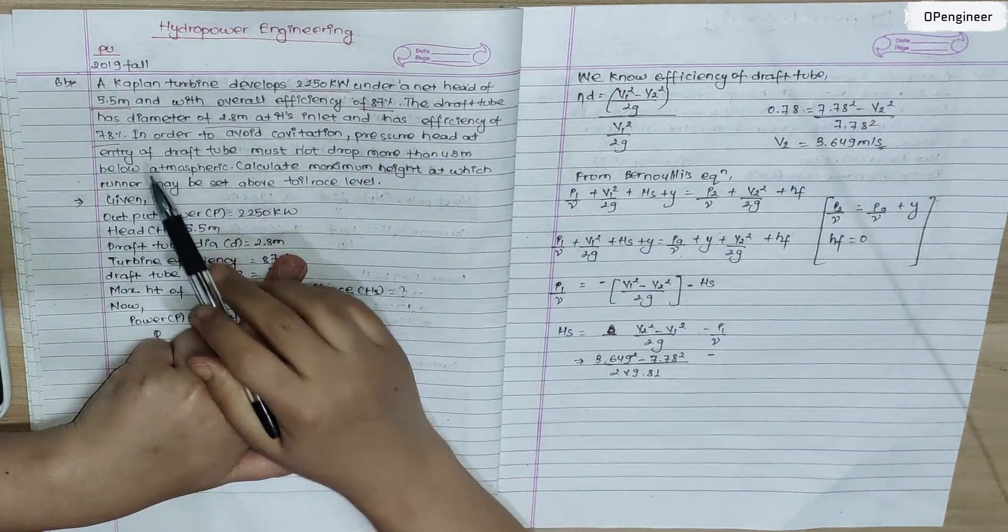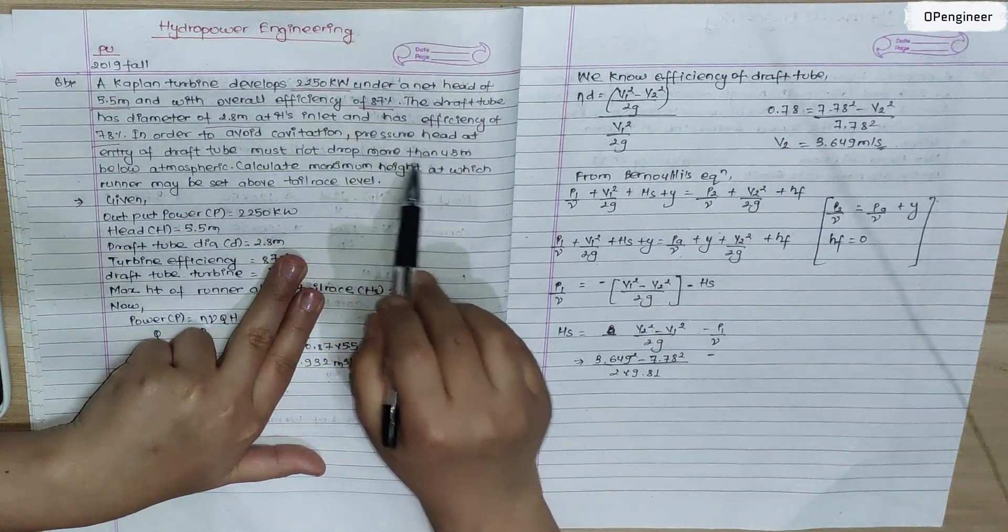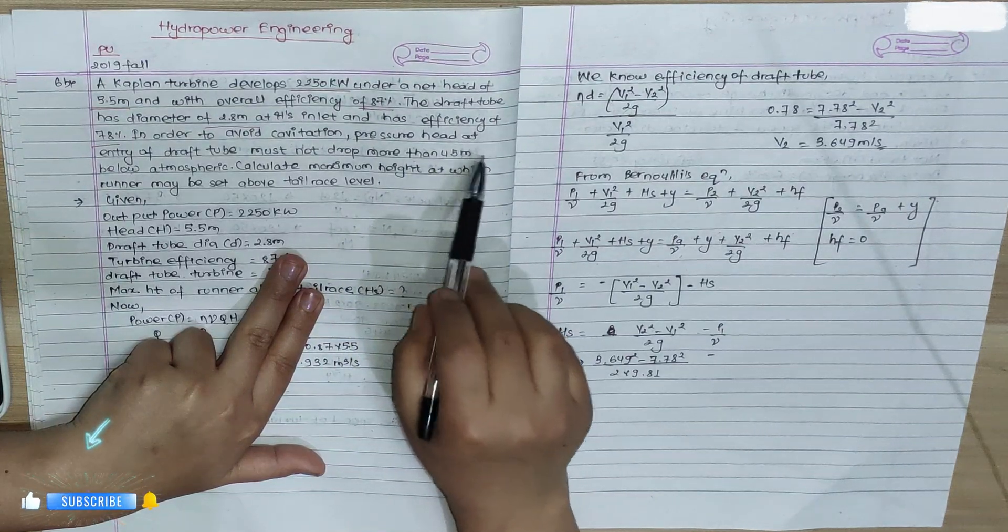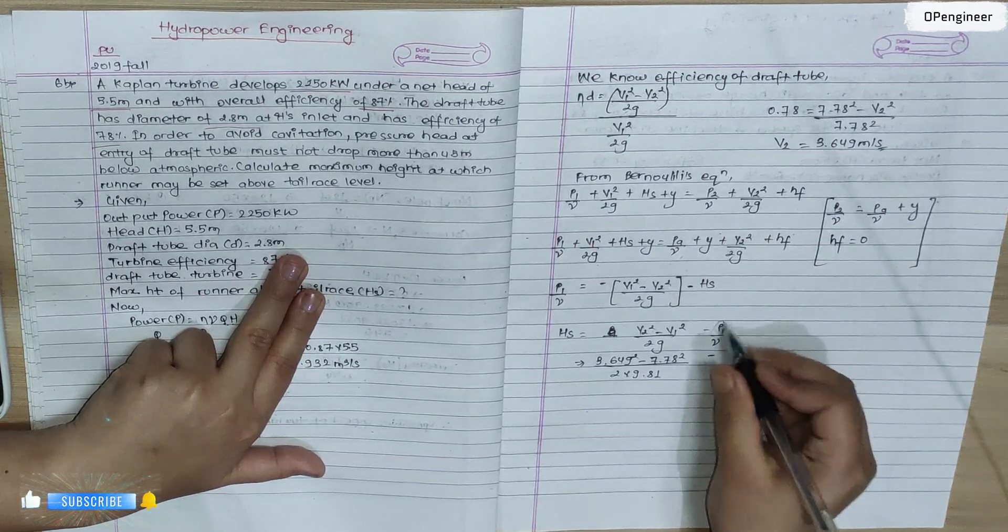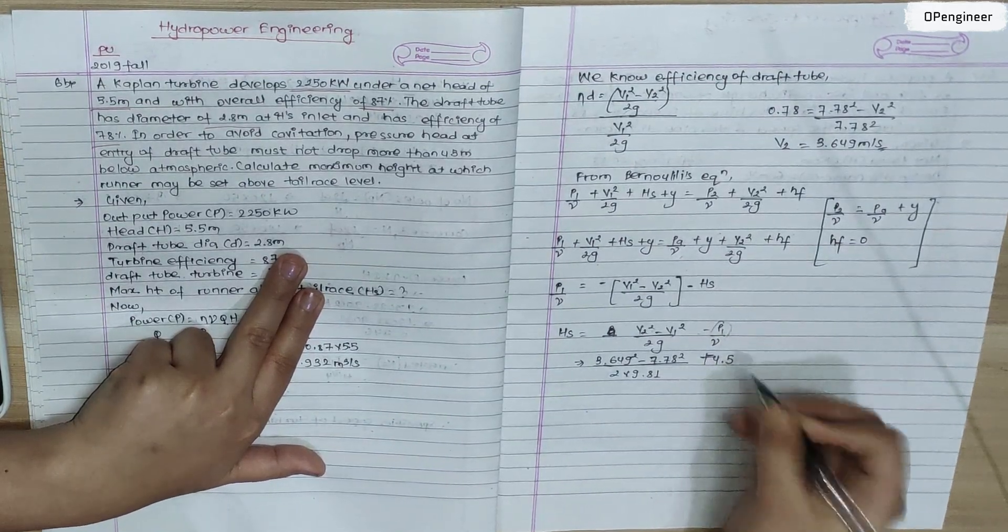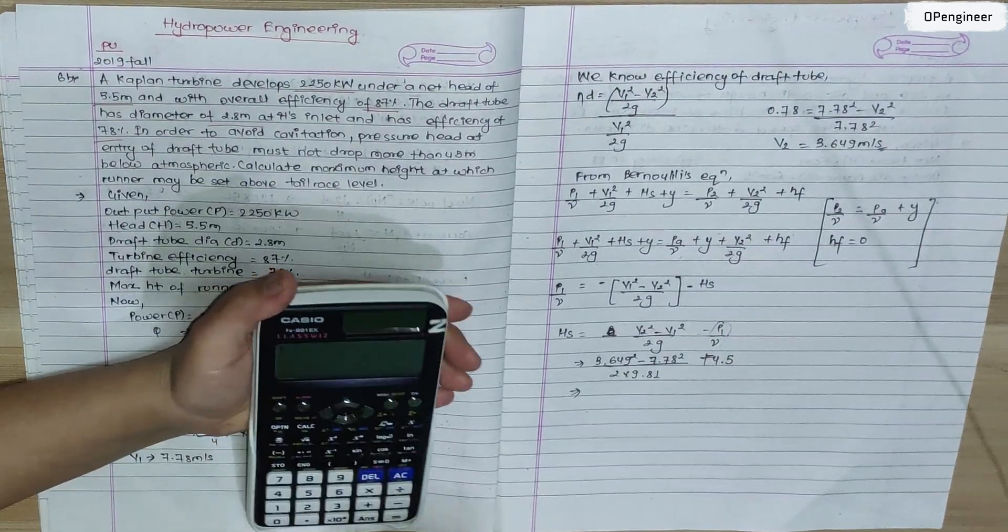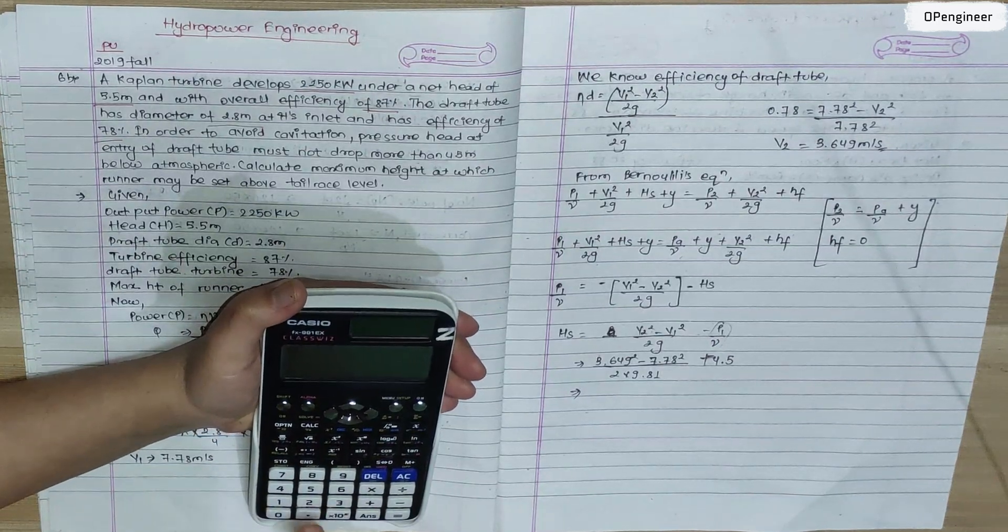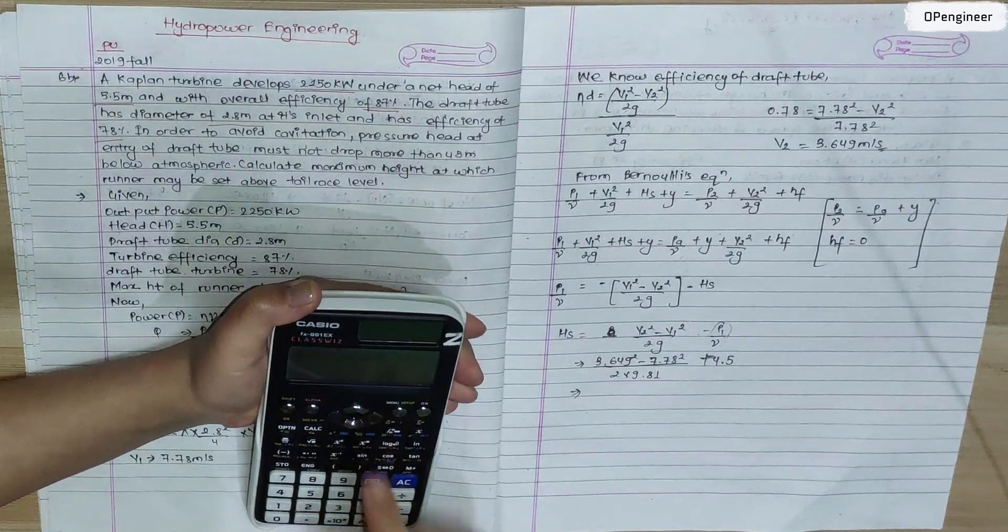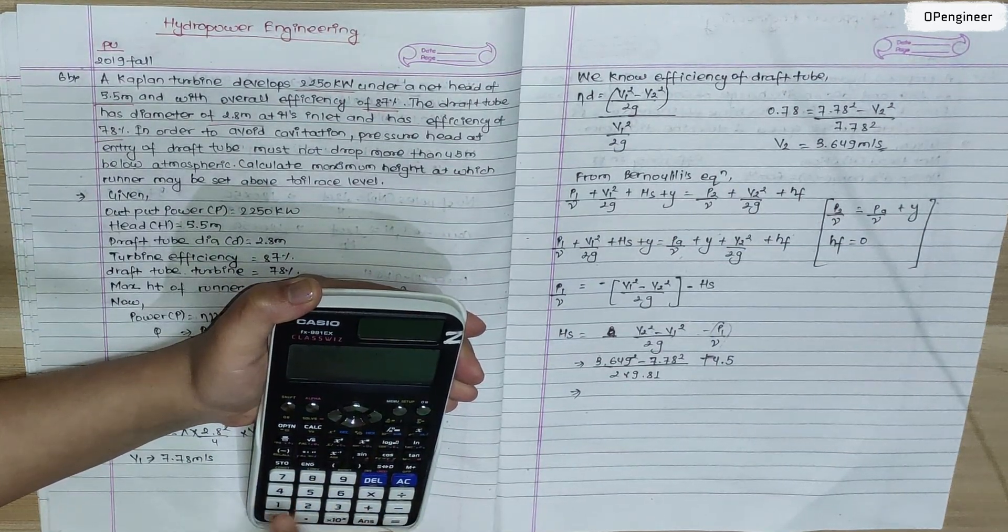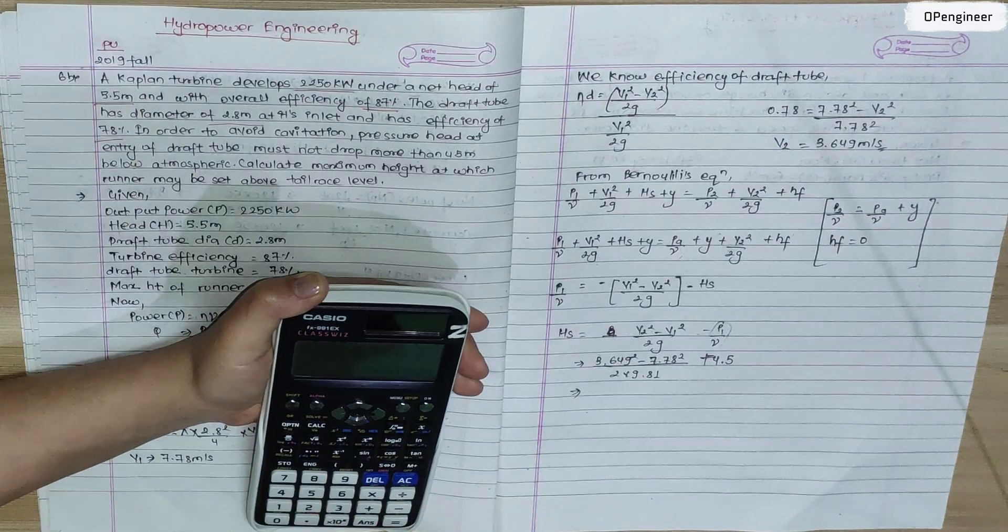From the question, pressure head at entry of draft tube must not drop more than 4.5 meters. So P1/γ is 4.5. Calculating: (3.649² - 7.78²) / (2 × 9.81) + 4.5. This calculation gives 2.09 meters.